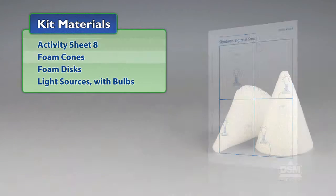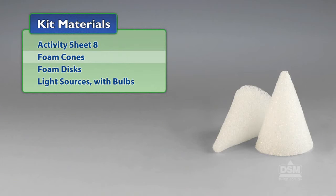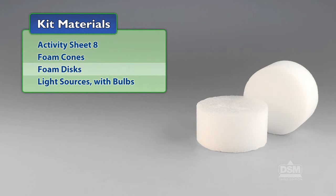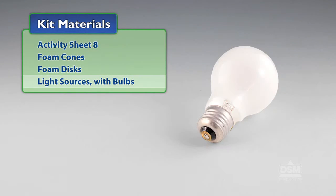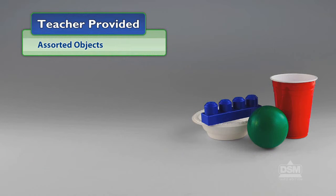You will need the following materials from the kit: Activity Sheet 8, foam cones, foam discs, and light sources with bulbs. You will also need to provide assorted objects such as a ball, spool, pencil, stapler, or roll of masking tape.